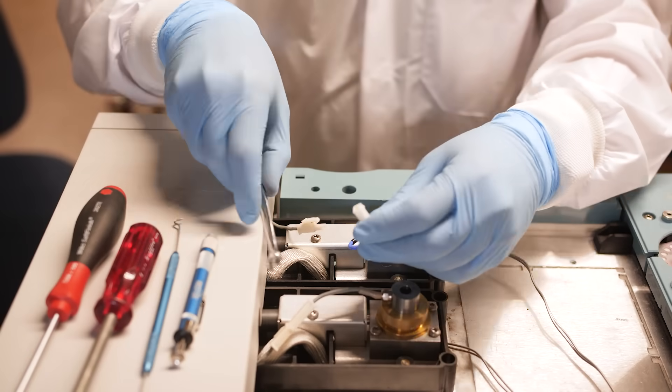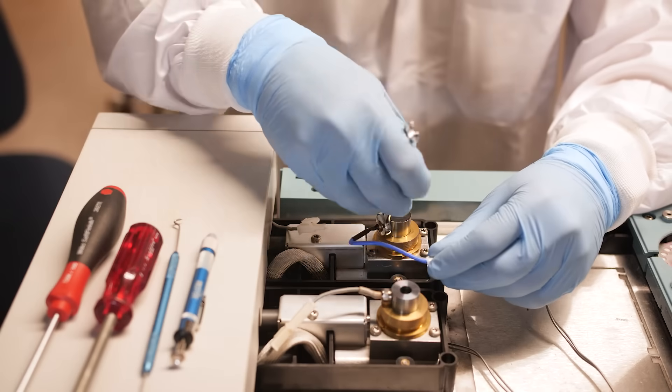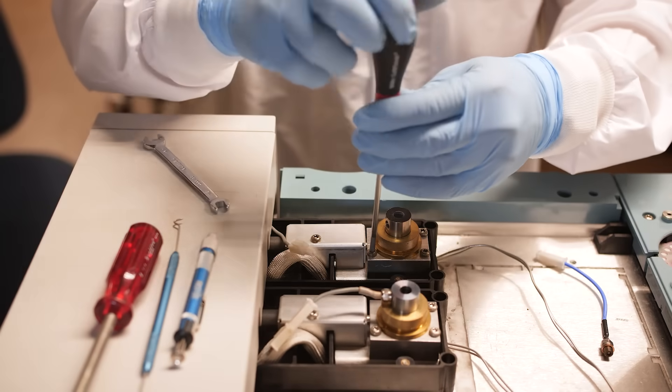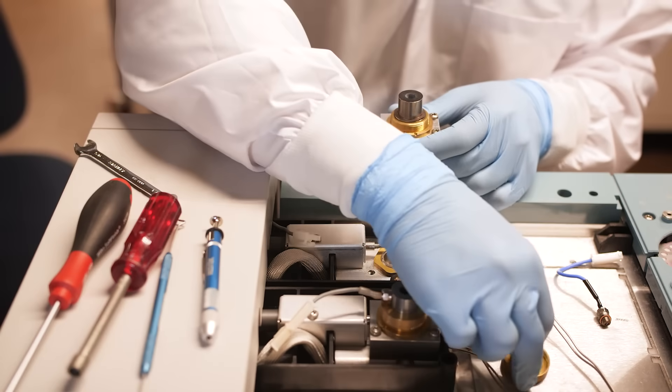Next, we'll start to disassemble the FID. Remove the igniter and all torque screws from the FID body. Then, remove the knurled brass retaining nut and spring washer.